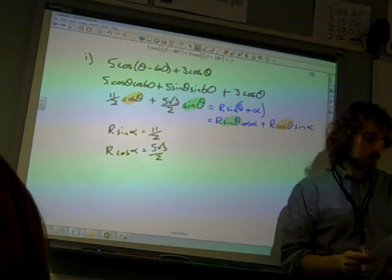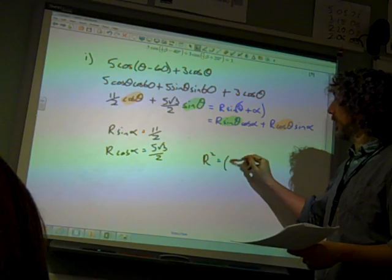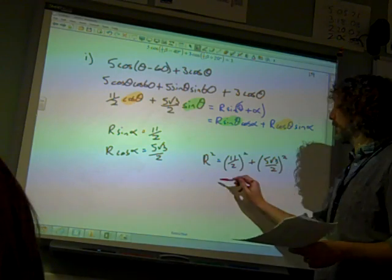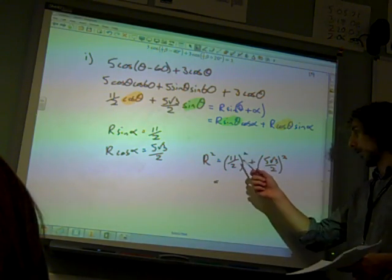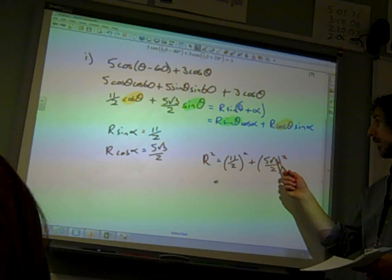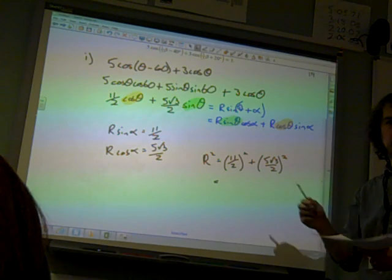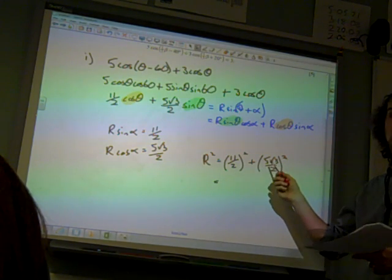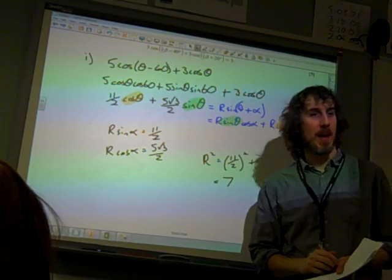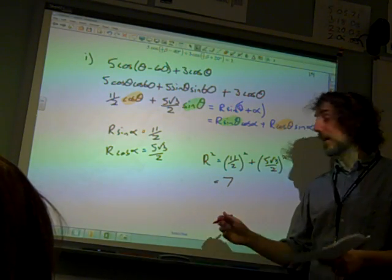We'll sort this out now by squaring and adding. So R² is (11/2)² plus (5√3/2)². Which is, what's that? 44 plus another amount, 75. So it adds up to 40. So we get 7 from that.